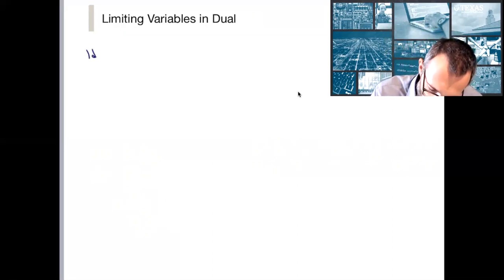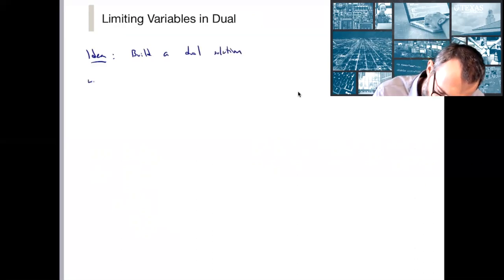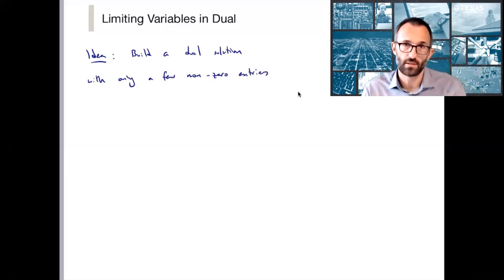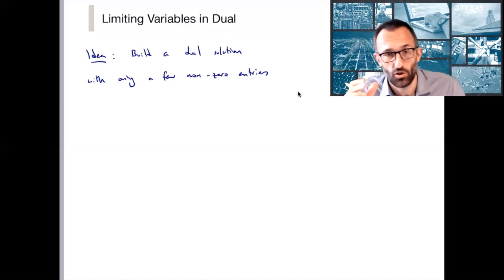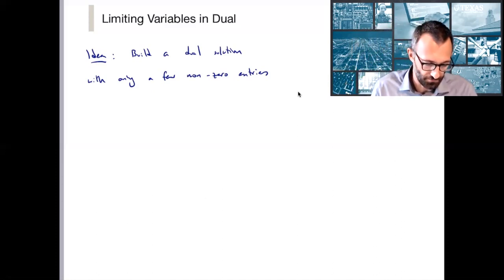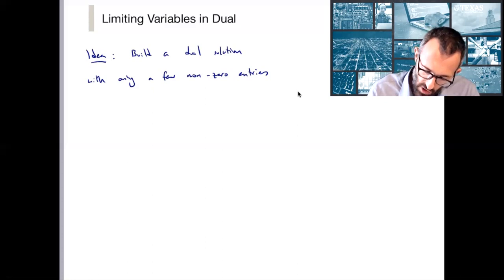Though we're not going to appeal directly to the TDI lecture that we just saw in the Cunningham-Marsh formula, that gives us the critical idea. We are only going to maintain, we're only even going to consider variables that are in a laminar family. The idea is that we're going to build a dual solution with only a few nonzero entries. We've already seen this several times.